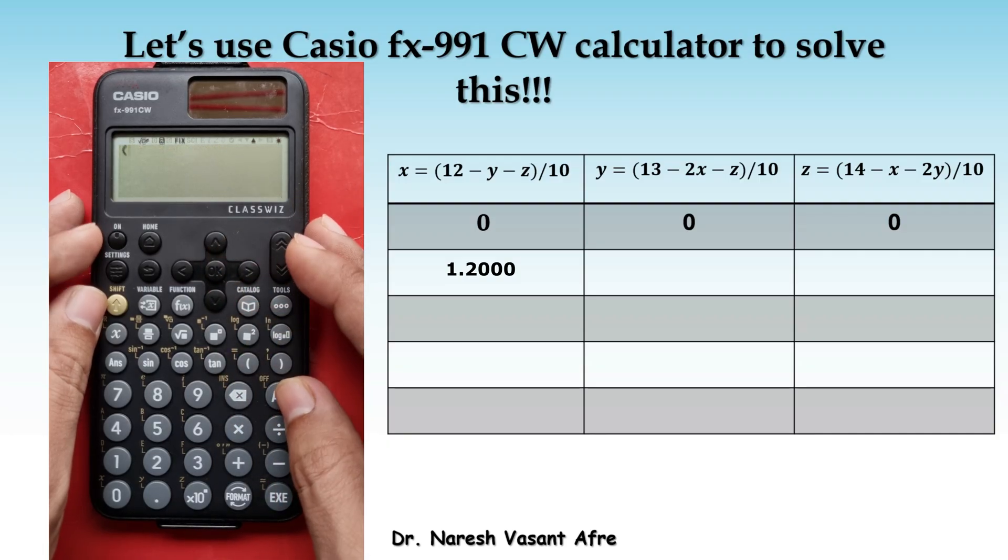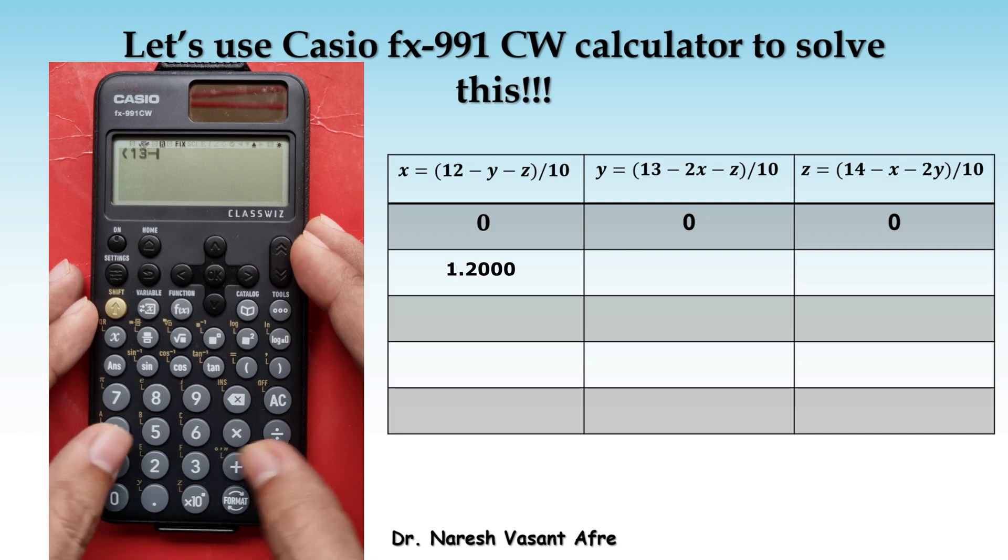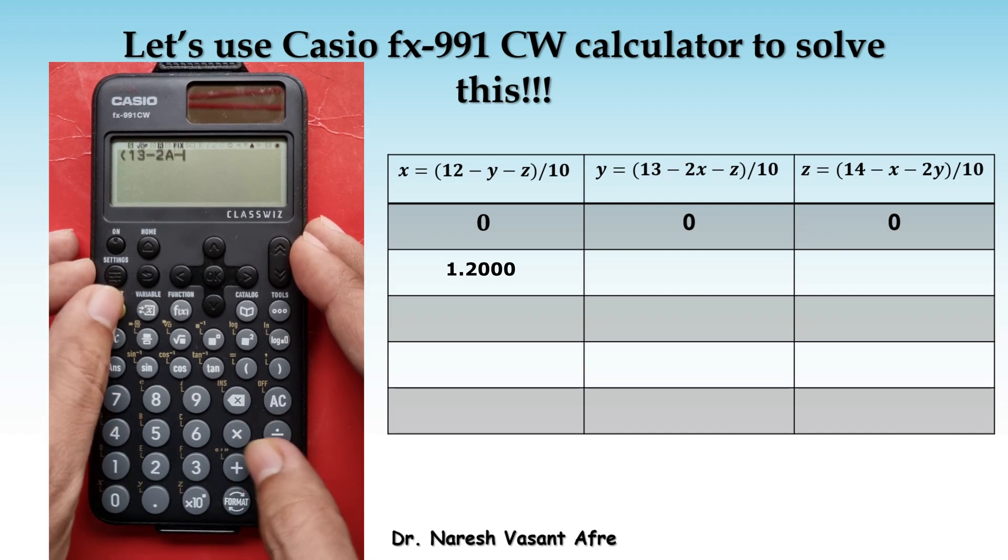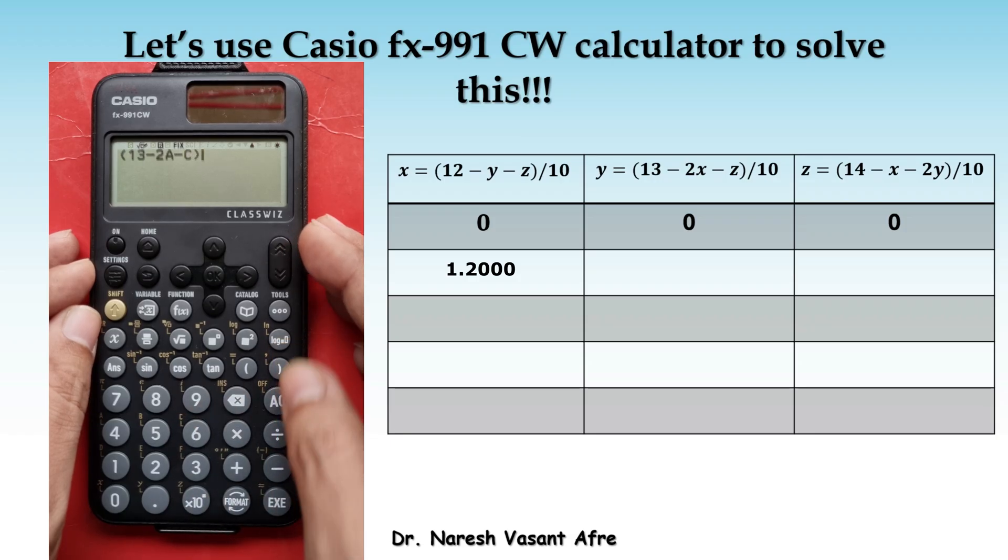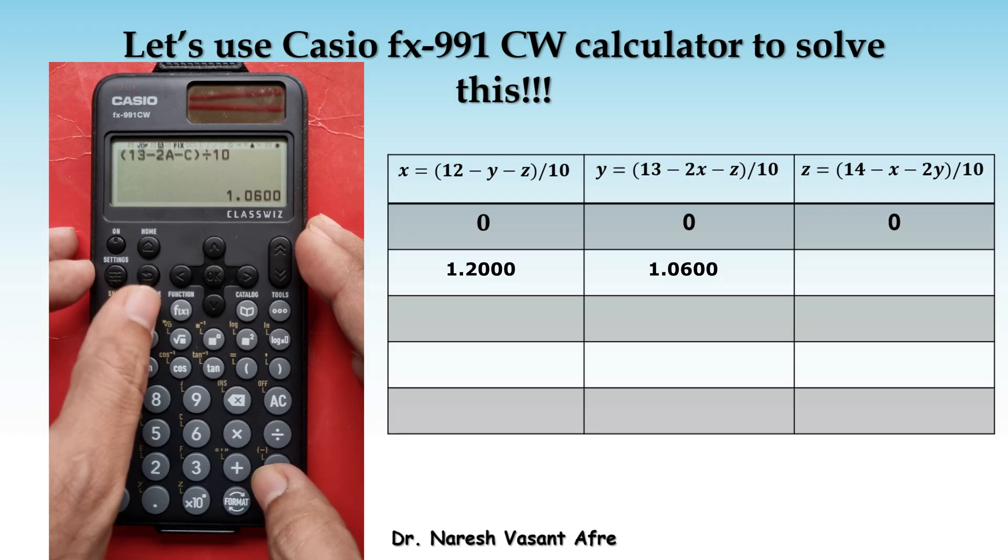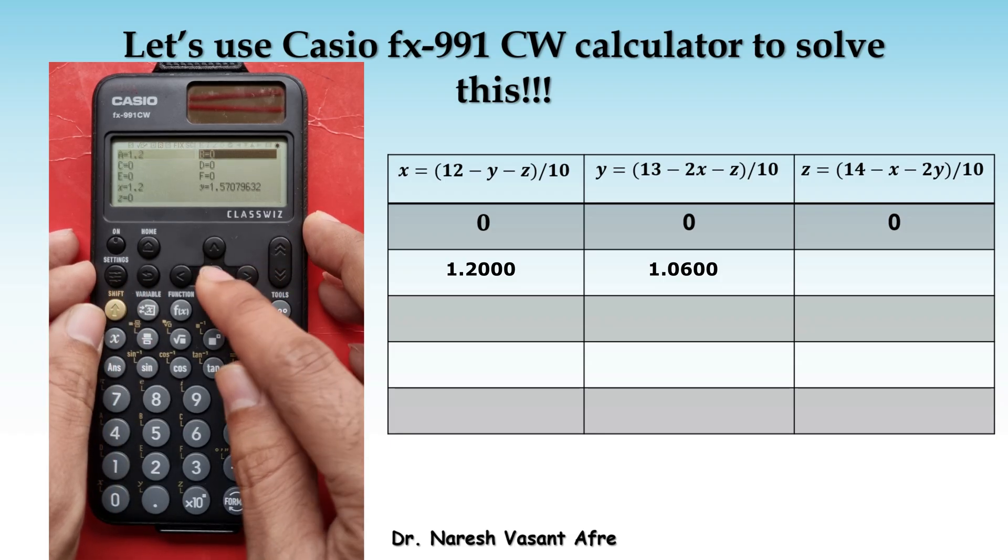Next, we compute the value of Y that is 13 minus 2X but the value of X is stored in A. So, that is 13 minus 2A minus C divided by 10. This will give you updated value of Y. Now, we are going to store this new value of Y in B.